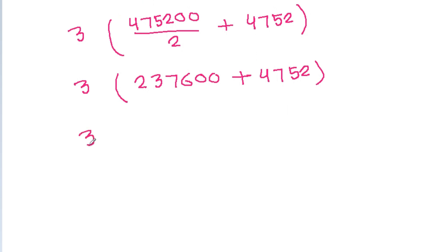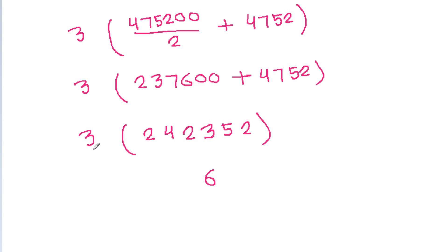It is 3 times 237600 plus 4752. Adding: 6 plus 7 will be 13, 7 plus 4 will be 11 plus 1 will be 12, 3 plus 1 will be 4, giving us 242352. Then 2 times 3 is 6, 5 times 3 is 15, 3 times 3 is 9 plus 1 is 10, 2 times 3 is 6 plus 1 is 7, 4 times 3 is 12, giving a final result of 727056. So this is the required value.